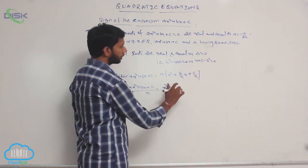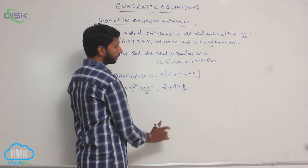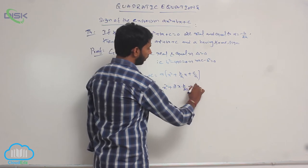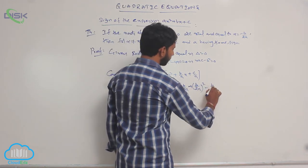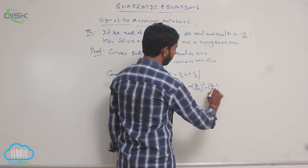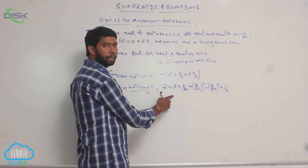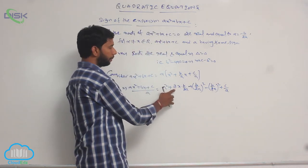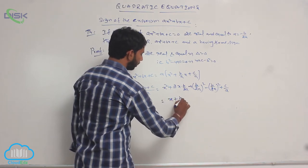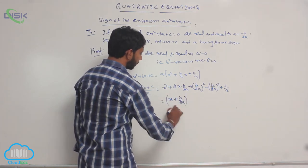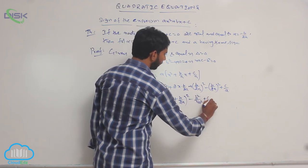Multiply and divide the second term by 2. That gives x² + 2·x·(b/2a) + (b/2a)² - (b/2a)² + c/a. The first three terms are of the form a² + 2ab + b², which can be written as (a + b)². So we get (x + b/2a)² - b²/4a² + c/a.